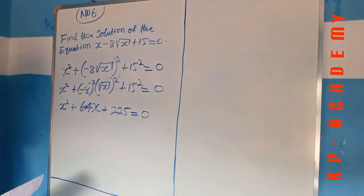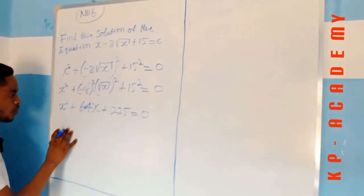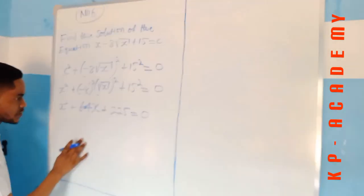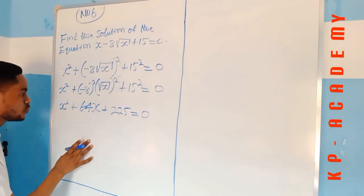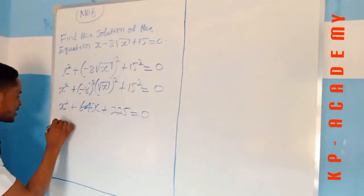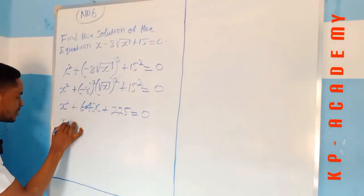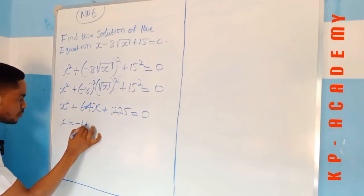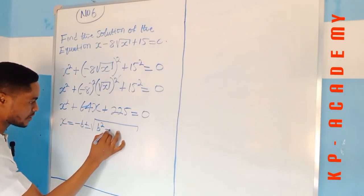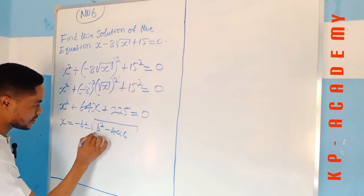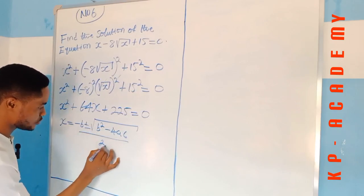So this is now a quadratic equation. We are going to be using almighty formula to solve this quadratic equation. The almighty formula says that x is equal to minus b plus or minus square root of b squared minus 4ac all over 2a.